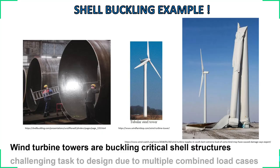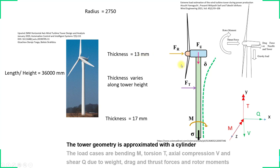A final shell buckling example: wind turbine towers are also buckling critical structures. The parts are unstiffened cylindrical shells and they can buckle. For these structures we don't have only axial compression — we have a combination of loads including bending moments, wind forces, self-weight (gravity load), torsion, and shear forces.